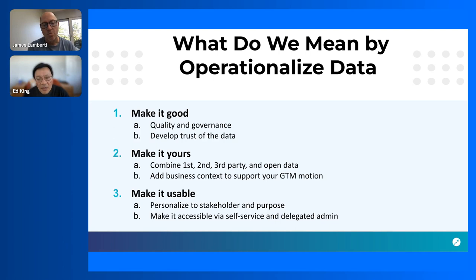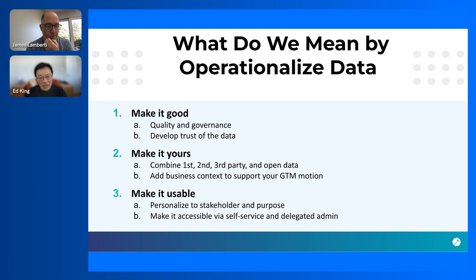Making it yours is about how you leverage market data to go to market. Generic data may not be helpful, so you take the data you have and combine it with your first-party data, potentially second-party data from partners, third-party data like Sales Intel, and open public-domain data. This is all about adding the proper business context to support your go-to-market.